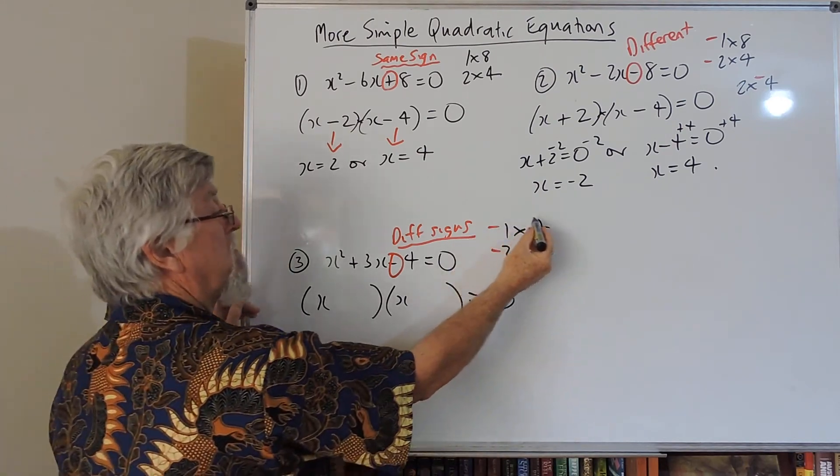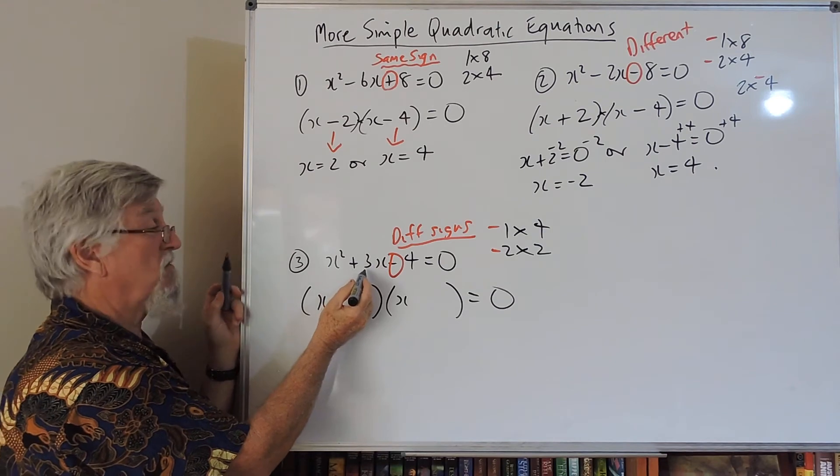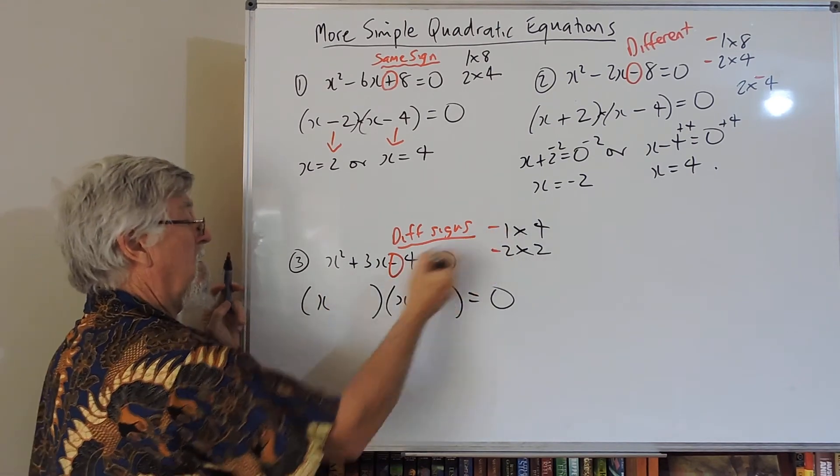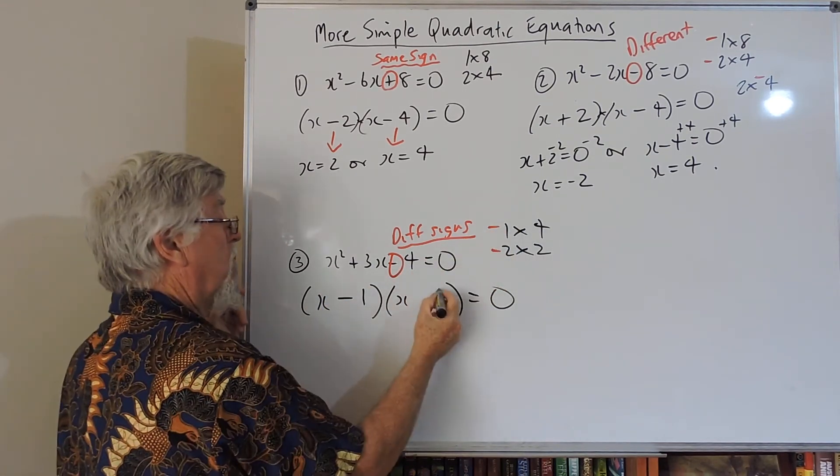Minus 1 plus 4 happened to be 3. That was nice. I got it first go. So the 1 gets a minus and the 4 gets a plus.